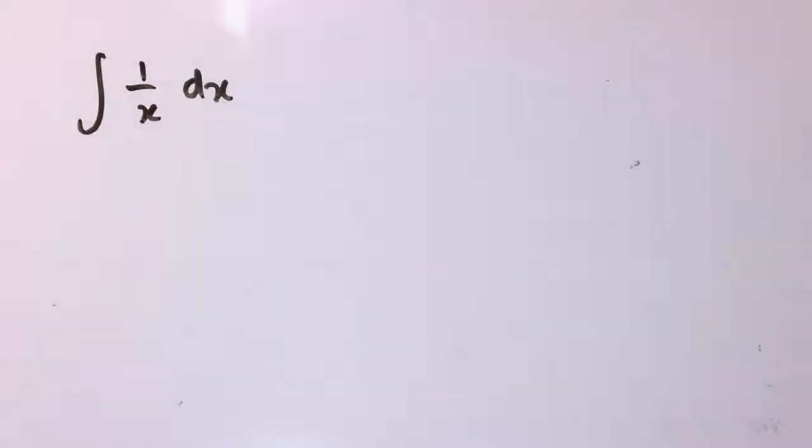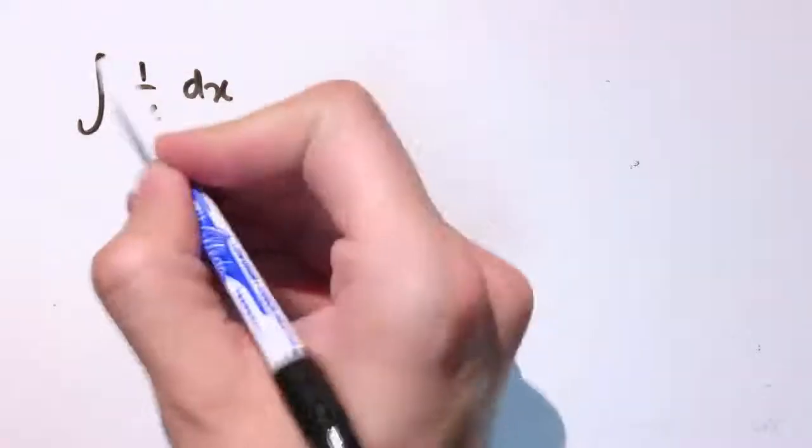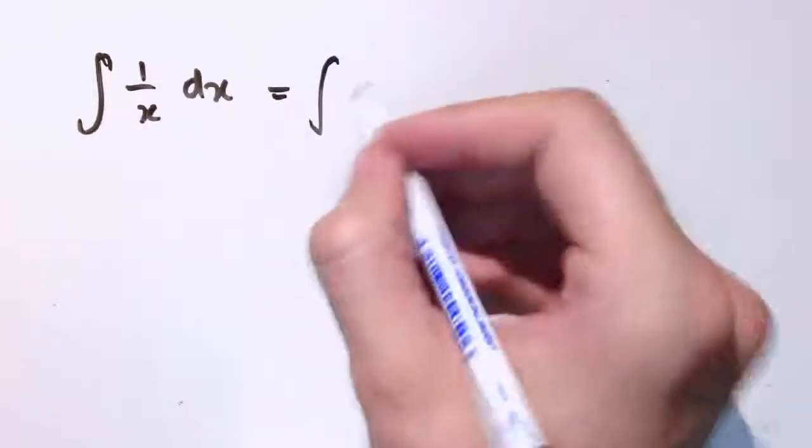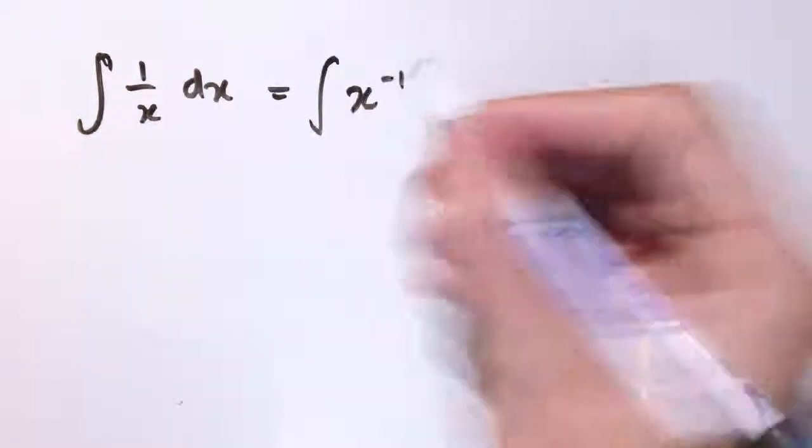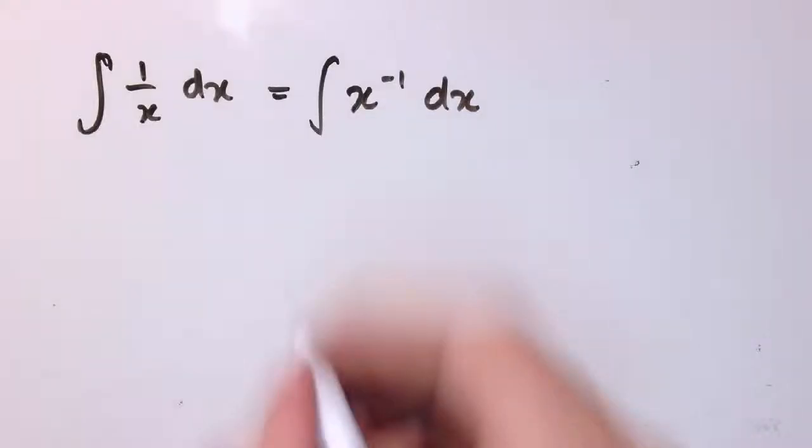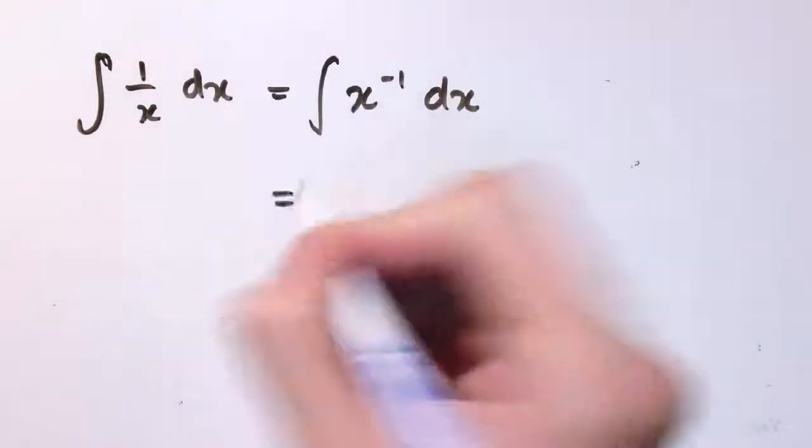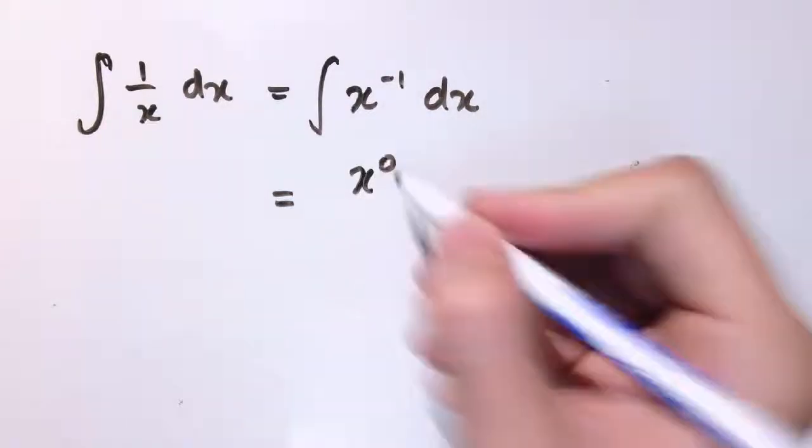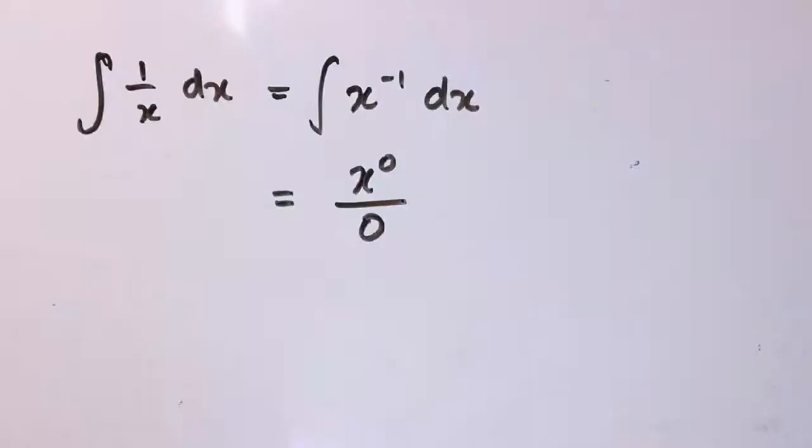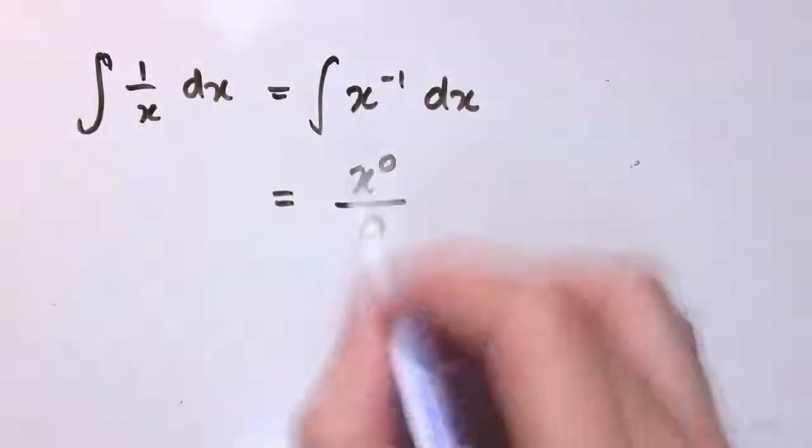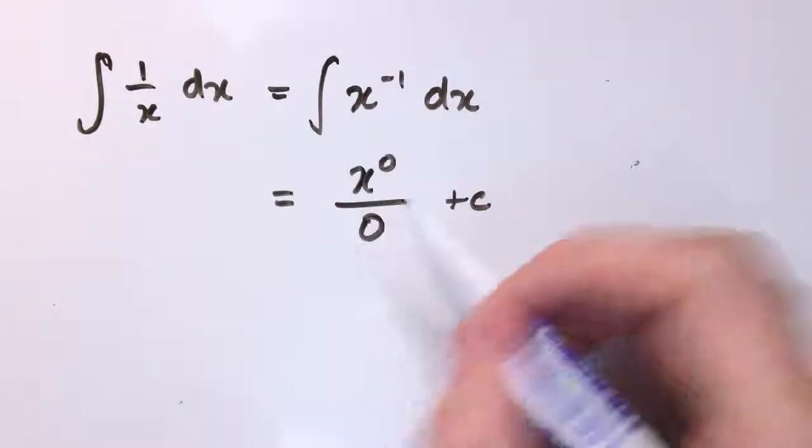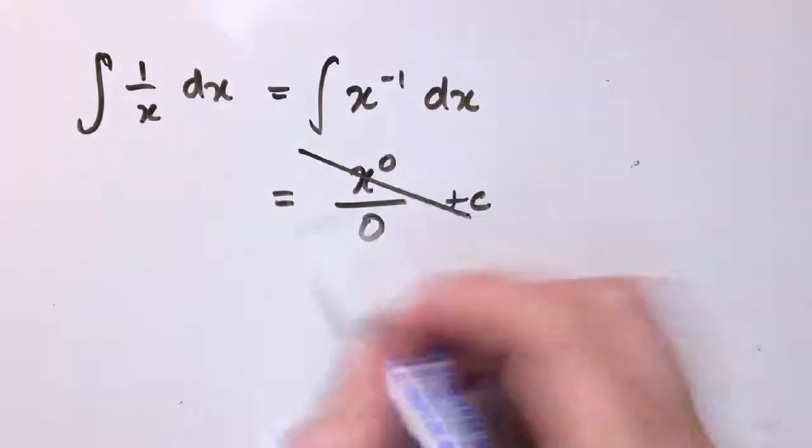Before we move on, it's worth just looking at this one: the integral of 1 over x with respect to x. This is a special case of integration. And if we try to write this as a power, it would be x to the minus 1 with respect to x. It looks okay so far, until we try to apply the rule which says increase the power by 1, because increasing it by 1 gives x to the 0, and now I've got to divide by that new power, and I get divide by 0.